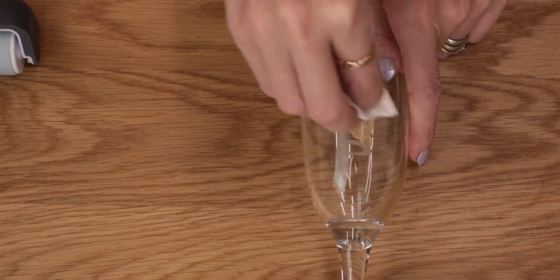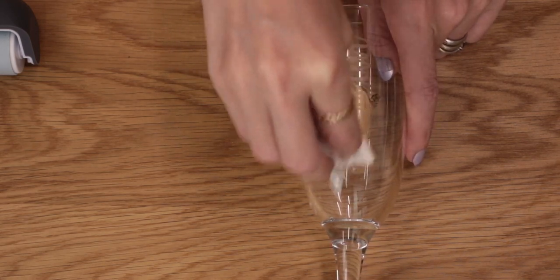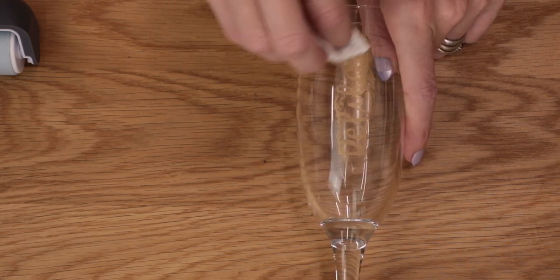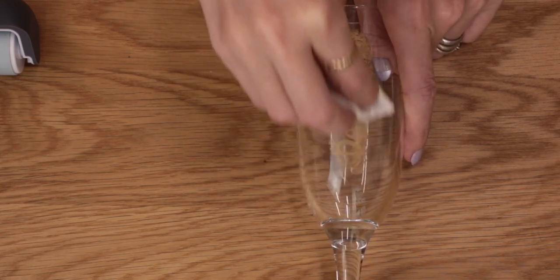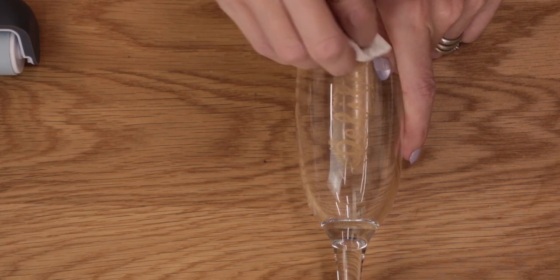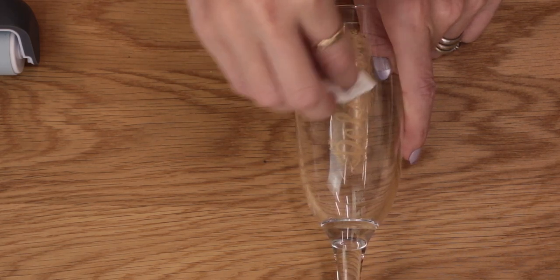So we're just going to start buffing that in and you want to make sure you get every piece of etching. Then you're going to get a clean part of your paper.